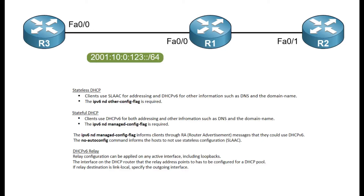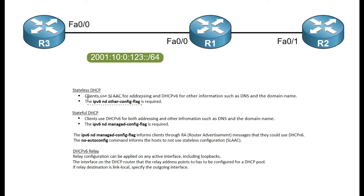Let's talk about DHCP for IPv6, which is a little different than DHCP for IPv4. The main difference is that we have two modes: stateless DHCP and stateful DHCP. With stateless, hosts use auto-config for the actual address. Router 3 is the host and Router 1 is the stateless DHCP server. Router 3 gets an address through auto-config and uses DHCP only for other information such as DNS and domain name. We set the other-config flag on the DHCP router, in this case Router 1.